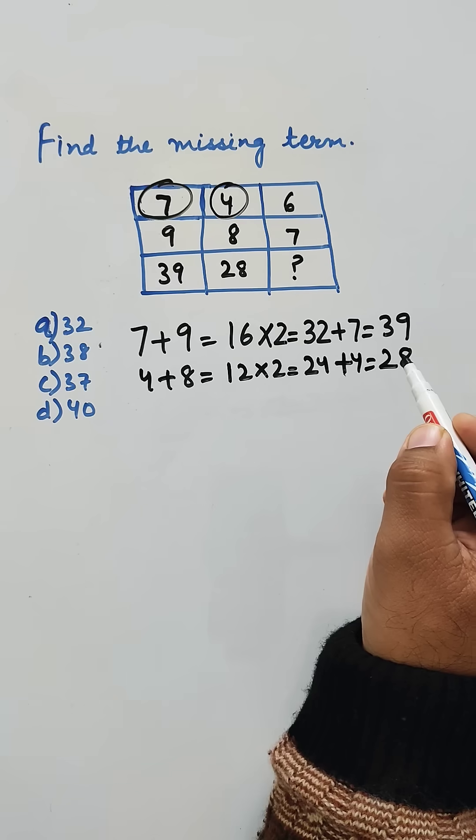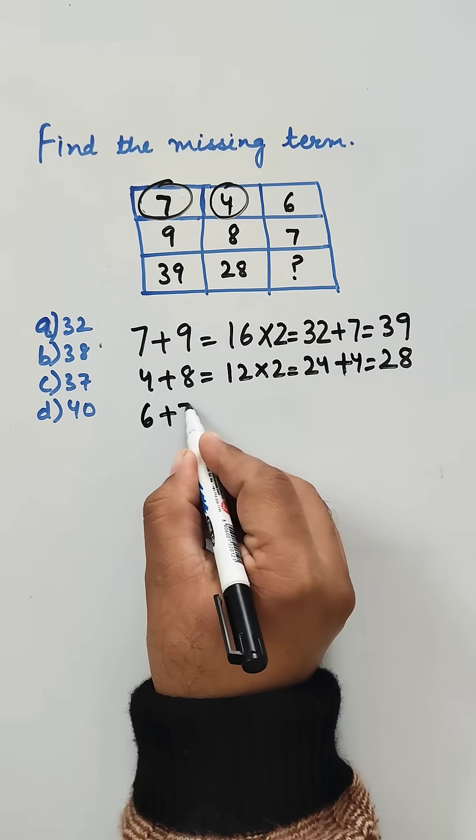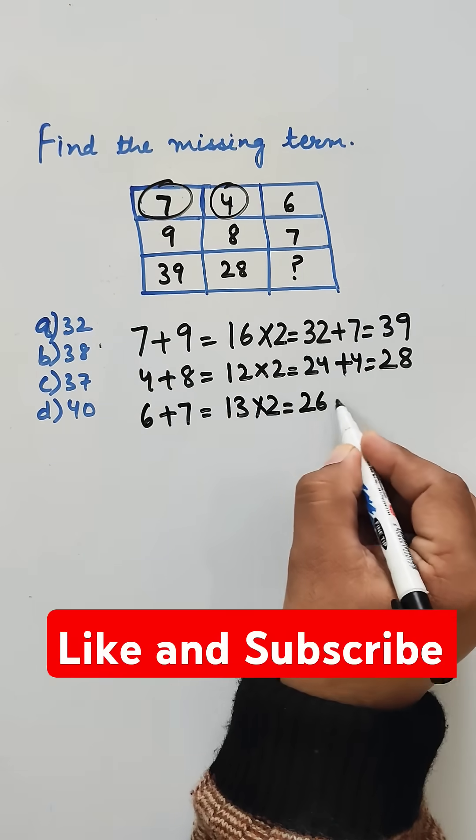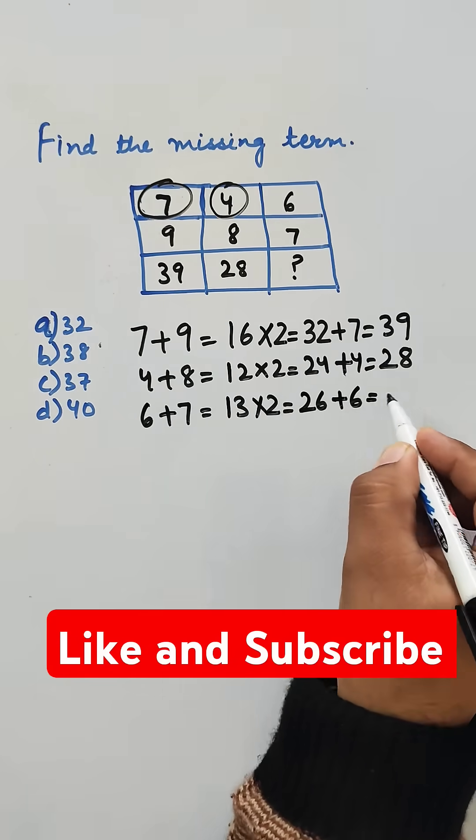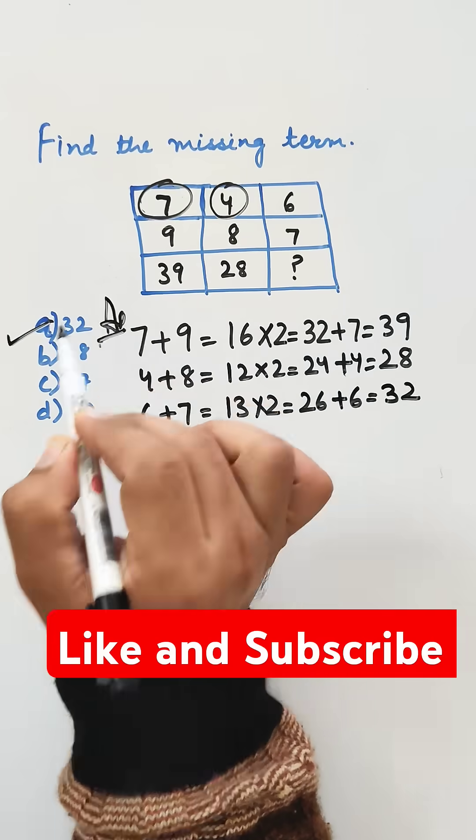We will apply the similar logic with this column. 6 plus 7 is 13, 13 into 2 is 26, and if we add 6, we get 32. So option a) 32 will be the correct answer.